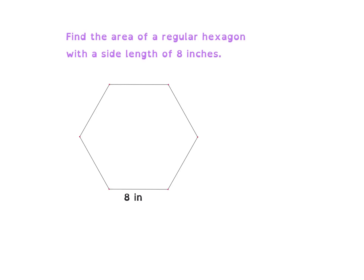Here's our first example: find the area of the regular hexagon with a side length of 8 inches. Since it has six sides, we would do 360 divided by 6, which gives us a 60-degree angle. So this central angle here is 60 degrees.